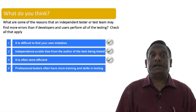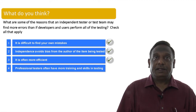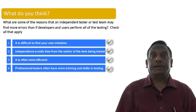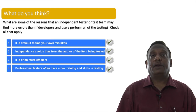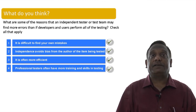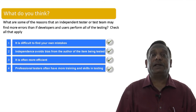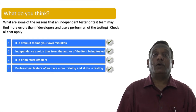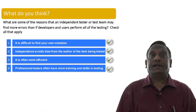The fourth reason for deploying an independent testing team: professional testers often have more training and skills in testing. The answer is again yes. Someone trained specifically in testing is more efficient at finding defects — they have the right skills to look at programs dispassionately and with an objective mindset. Developers typically have more skills and training in how to develop software and may not always have the right skills to perform thorough testing. So all four reasons are valid reasons why independent testing can be beneficial.